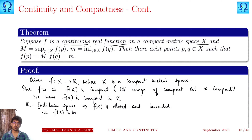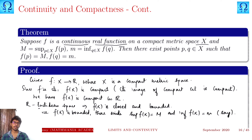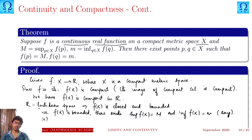We have f(X) compact, where f(X) lies in ℝ. Now ℝ is a Euclidean space, which implies — since a set is compact in a Euclidean space if and only if the set is closed and bounded — since f(X) is bounded, there exists a supremum of f(X) and an infimum of f(X). Let us denote the supremum as M and the infimum as m.